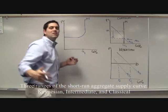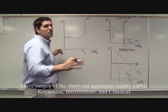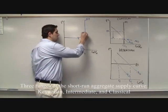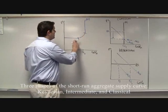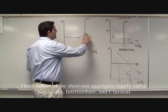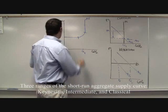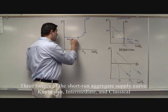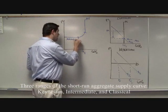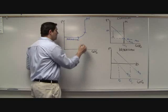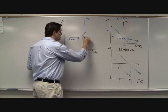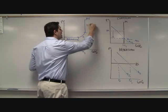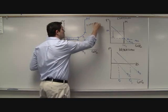That's the aggregate supply curve. You don't necessarily need to draw it exactly like that on the AP test — just understand that there are three different sections: the Keynesian range, the intermediate range, and the classical range.